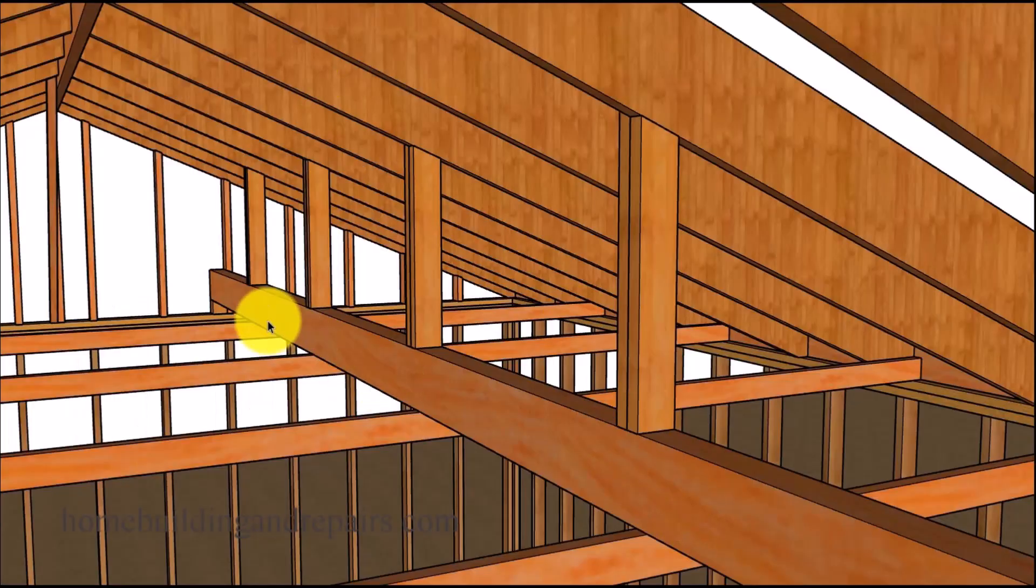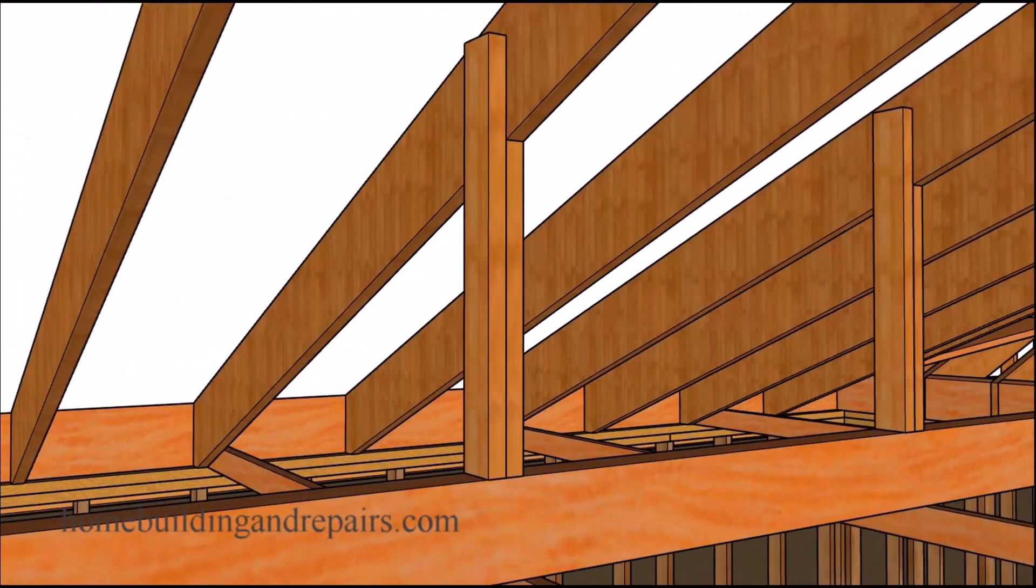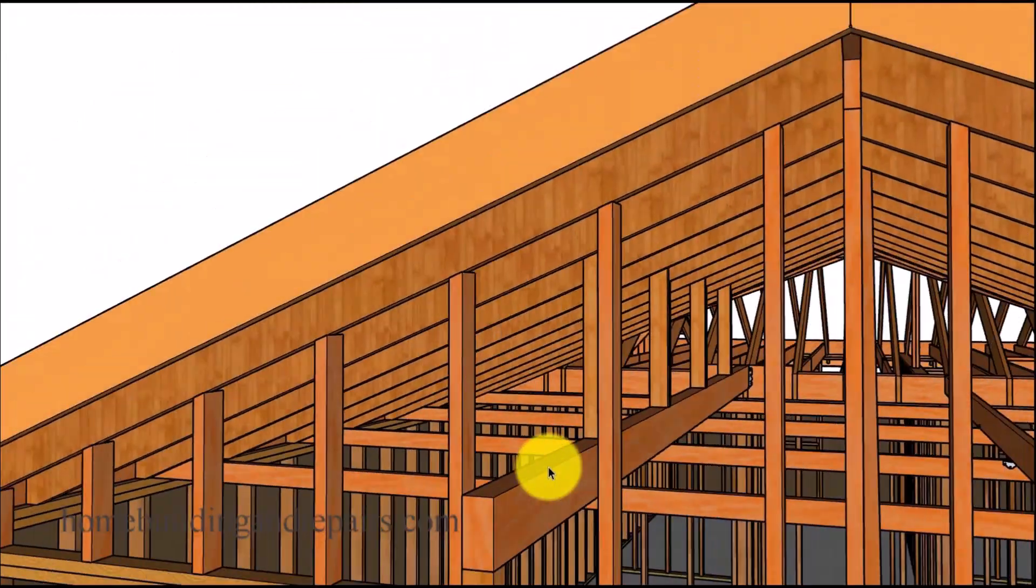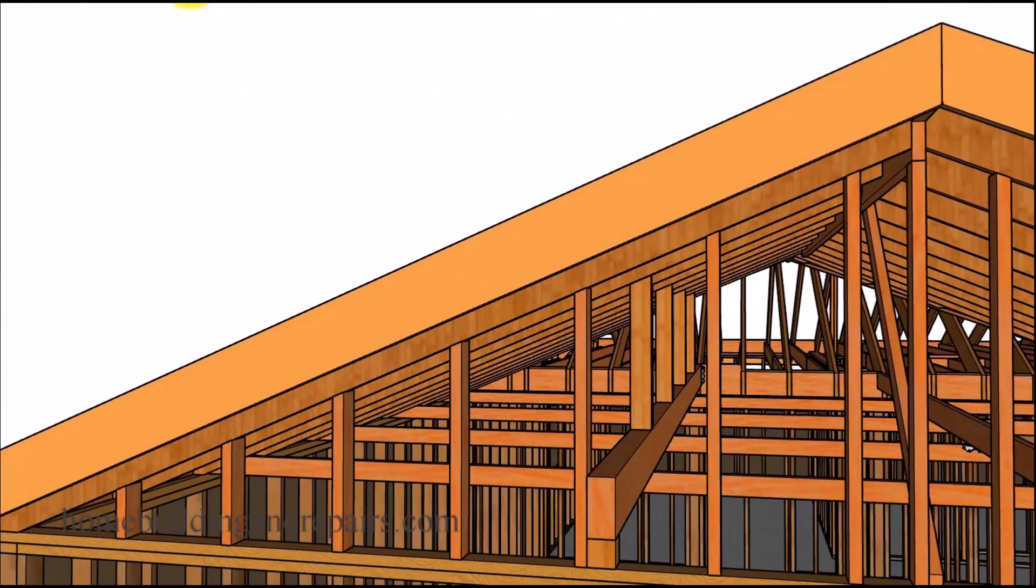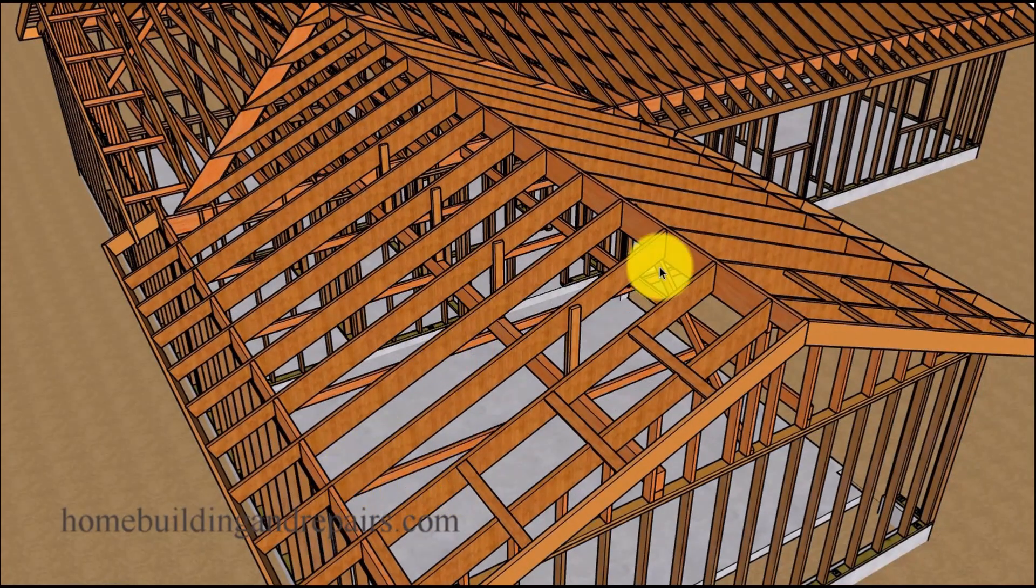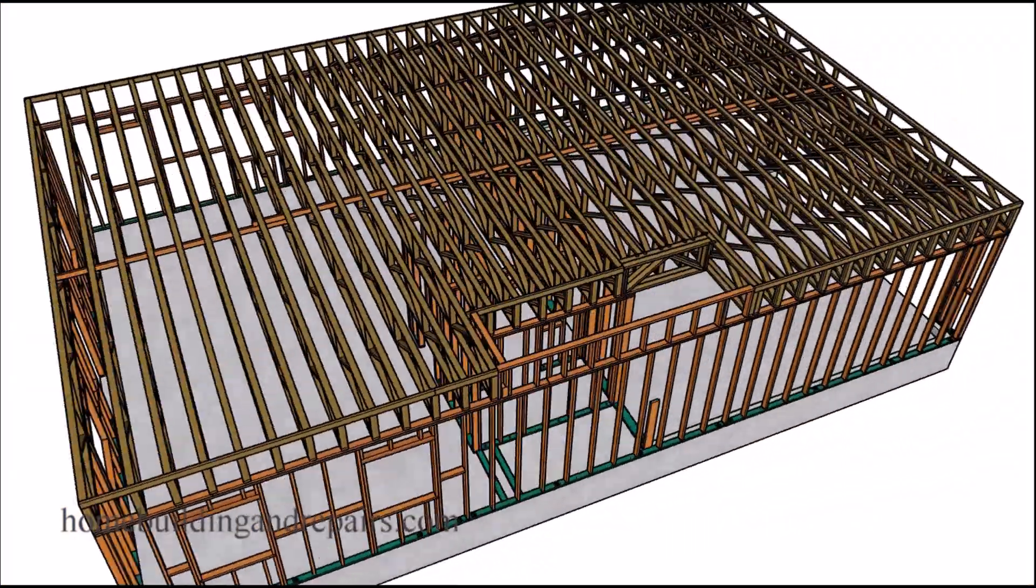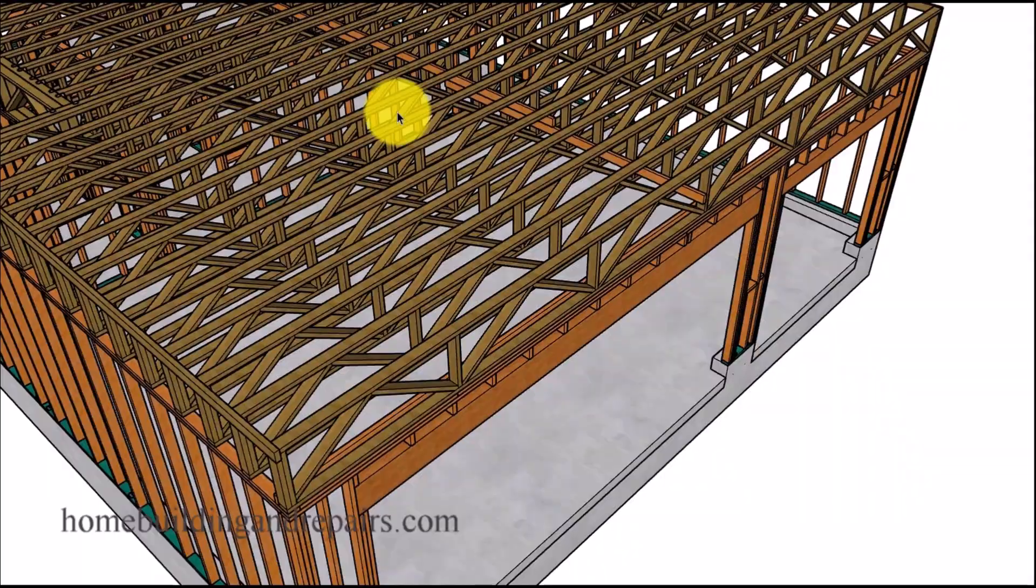And of course, if you use a large enough beam for your strong back, and of course, this might not be referred to as a strong back anymore, might be a structural beam, then you could always use it to support the roof if you're having problems with the roof rafters sagging. And that might be a more common situation in a building with two by four roof rafters, or even longer spans with two by six roof rafters.